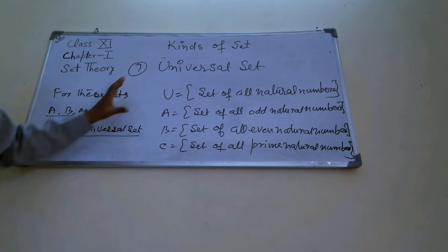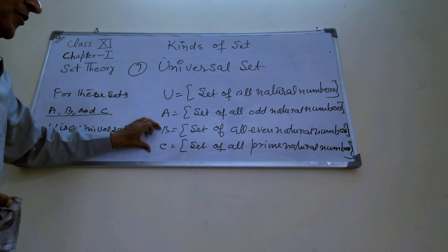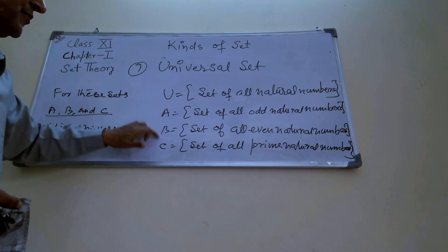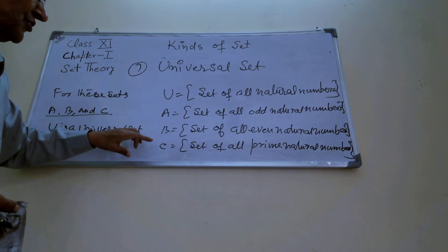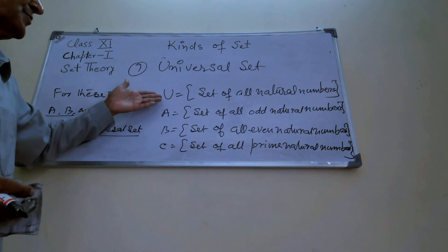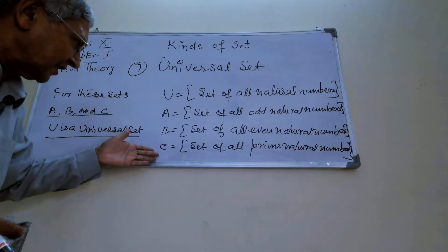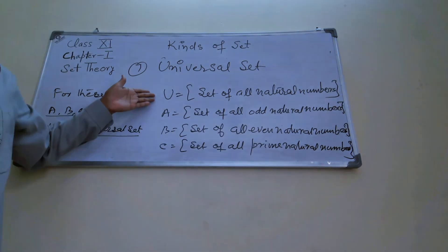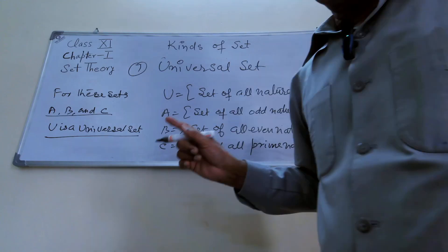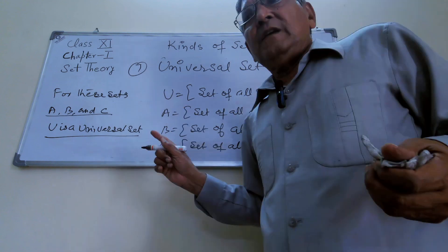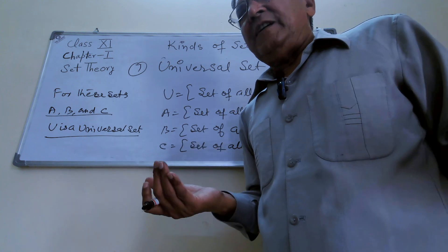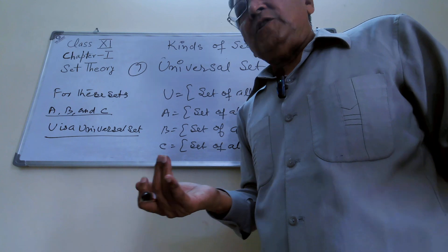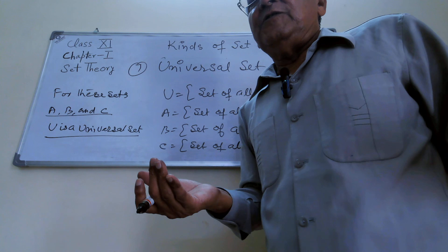So you have seen: U is a big set, and A, B, C are small sets. All the elements of A, B, and C are in U. Therefore, all the sets A, B, and C are subsets of U, and for these sets, U is a universal set. The universal set contains all these sets which are its subsets, and for all the subsets, U is the universal set.